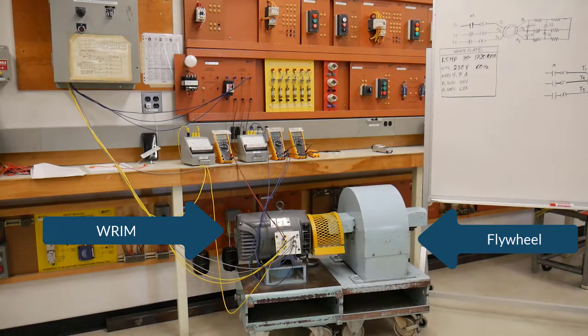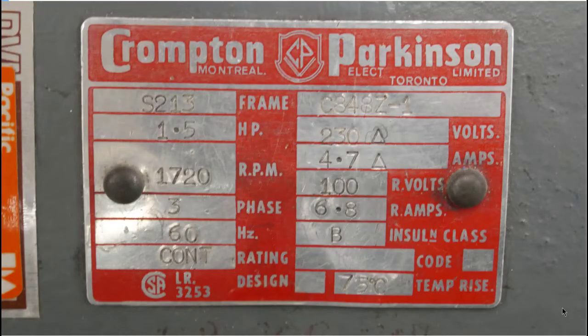Let's look at the nameplate. This wound rotor machine is 1.5 horsepower, 1720 full load RPM, three-phase 60 hertz. It operates at a line voltage of 230 volts. The stator windings are delta connected internally with a maximum line current of 4.7 amps. Maximum rotor voltage is 100 volts and maximum rotor current is 6.8 amps. It's a Compton Parkinson.